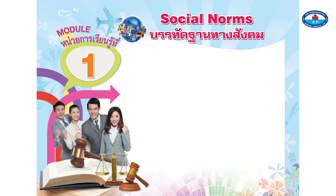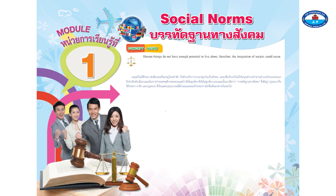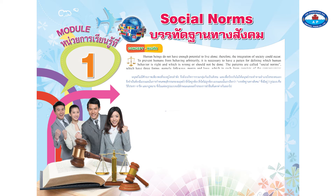Module 1: Social Norms Concept. Human beings do not have enough potential to live alone, therefore the integration of society could occur. To prevent humans from behaving arbitrarily, it is necessary to have a pattern for defining which human behavior is right and which is wrong or should not be done. The patterns are called social norms.